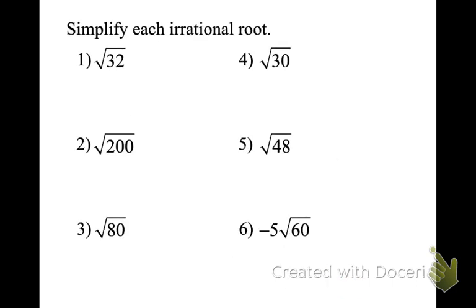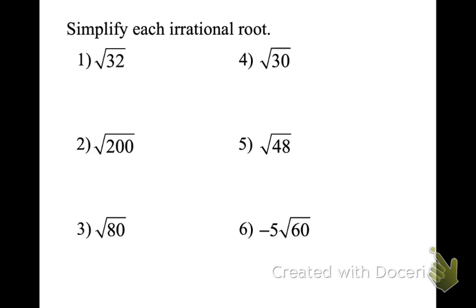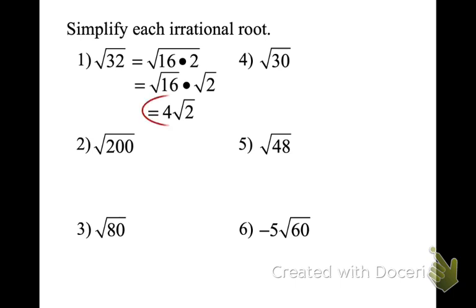Let's try some more — pause the recording and try the next few. Let's check our work. √32 is made up of 16 and 2, so that's 4√2. I could have broken it into 8 and 4 — 8 is 2 times 4, and pulling the perfect square gives 4√2 as well. √200: break it down to 100 times 2, so that becomes 10√2.